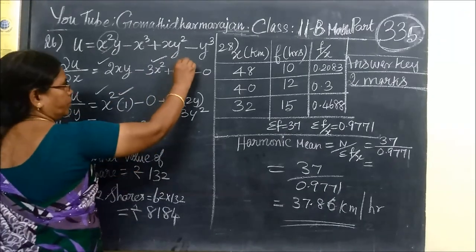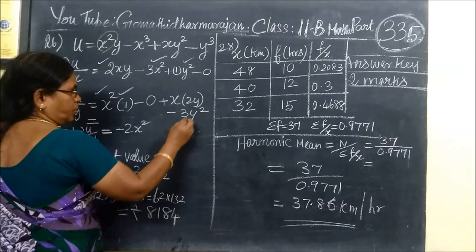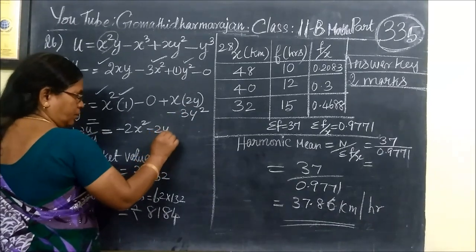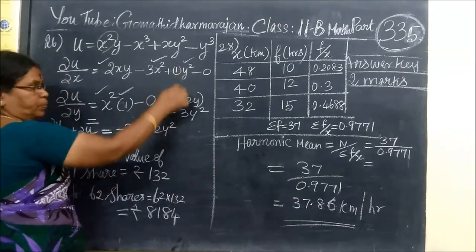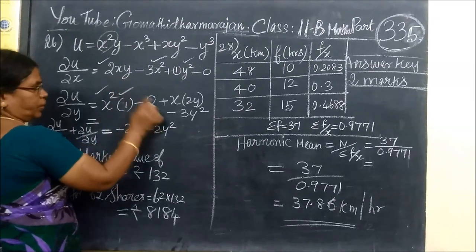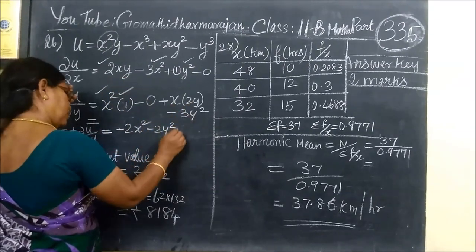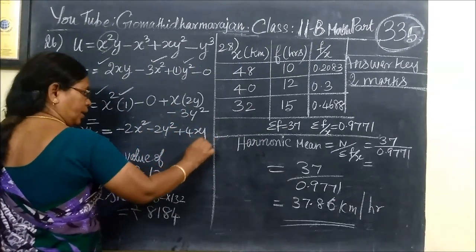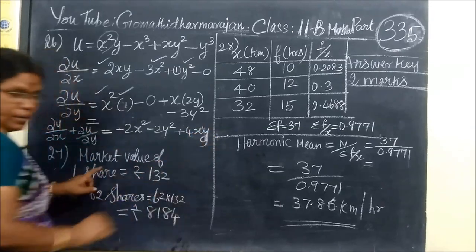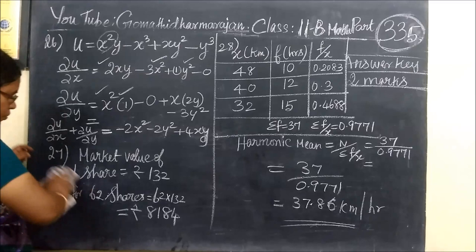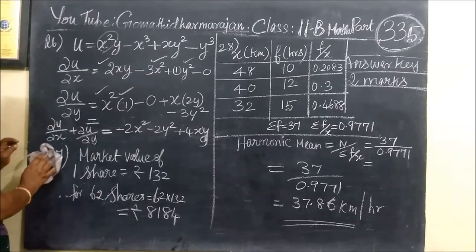We have y squared plus x squared and y squared. Then adding 2y squared. If we add 2y, then add 2y, and further adding terms gives 4xy for 2y.